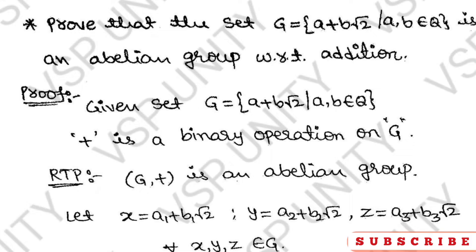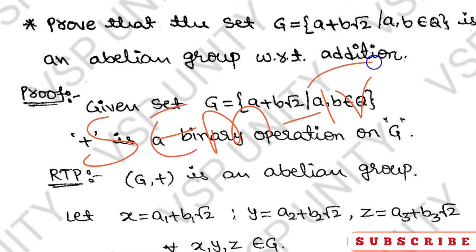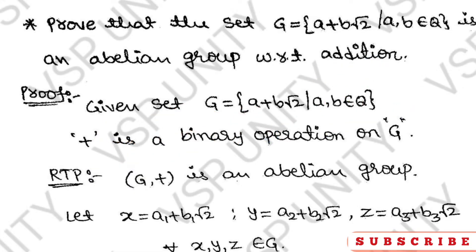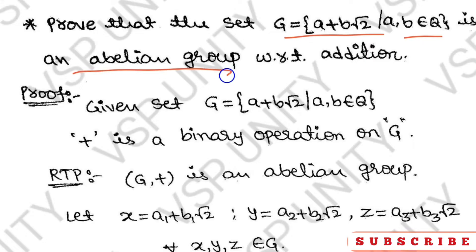Hi, hello everyone. Next problem. Children, prove that in the set G equals {a + b√2 such that a, b belongs to Q} is an abelian group with respect to addition.